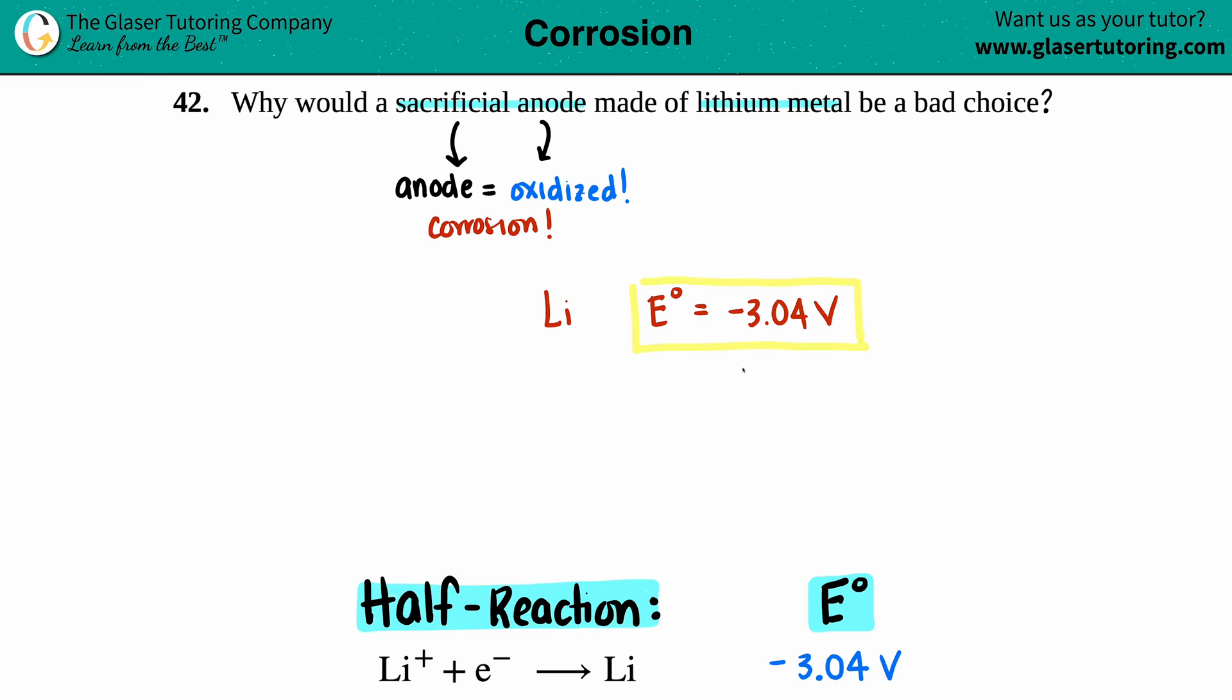Just by this value, negative 3.04 volts, that doesn't seem like a big number. We've seen much smaller numbers and much bigger numbers in the grand scheme of things, but in terms of cell potential, a negative 3, that's really low generally speaking.